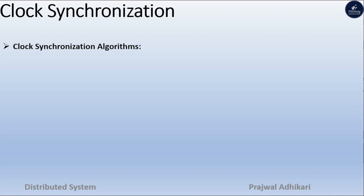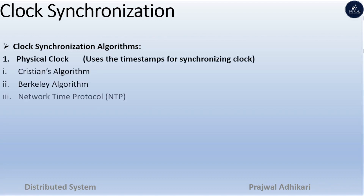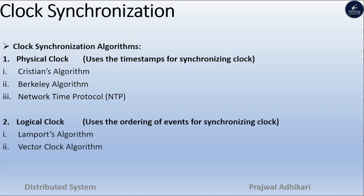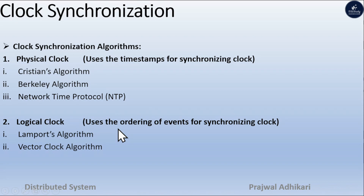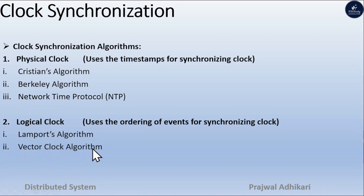There are different types of clock synchronization algorithms — physical clock and logical clock. Under physical clock, we will study Christian's algorithm, Berkeley's algorithm, and Network Time Protocol. Under logical clock, we will study Lamport's algorithm and vector clock algorithm. Physical clock uses timestamps for synchronizing the clock, whereas logical clock uses the ordering of events. In this video we will study physical clock and its algorithms; in the next video we will study logical clock and its algorithms.